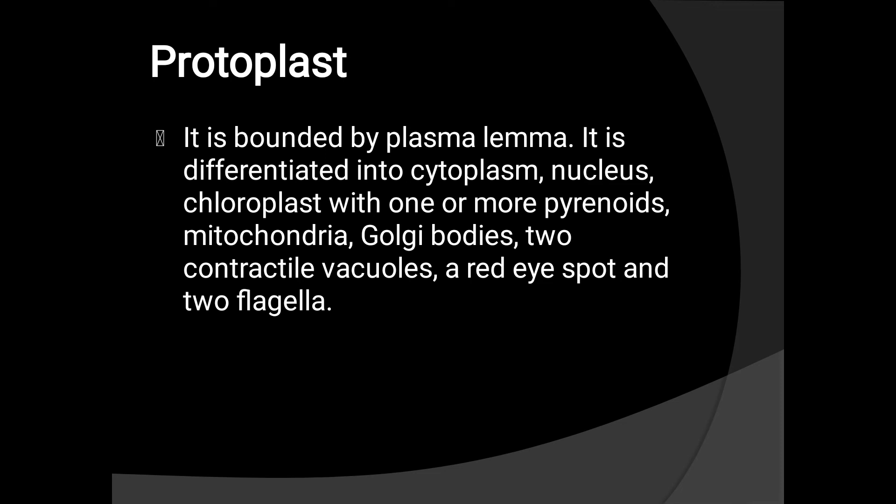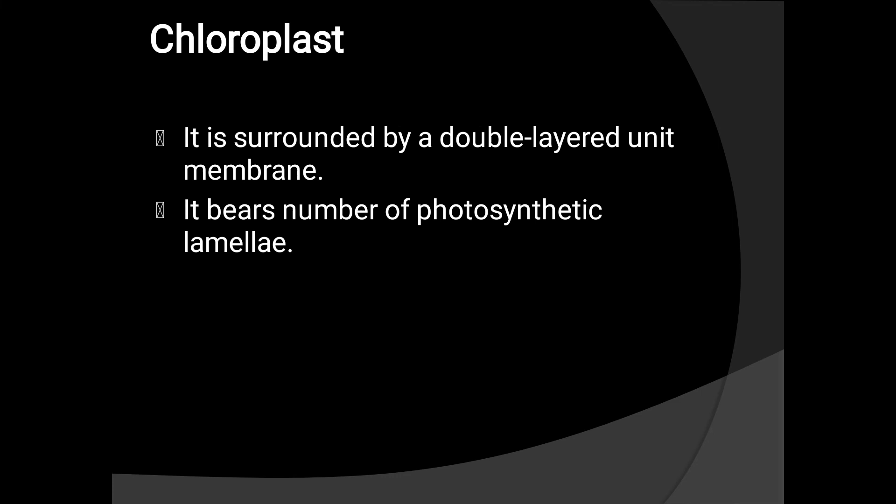Protoplast. It is bounded by the plasmalemma. It is differentiated into cytoplasm, nucleus, chloroplast with one or more pyrenoids, mitochondria, Golgi bodies, two contractile vacuoles, a red eye spot, and two flagella.